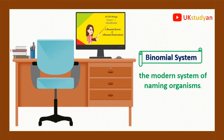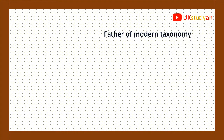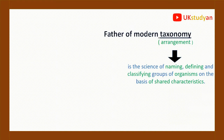Carl Linnaeus is also the father of taxonomy. Taxonomy, in its written form, means arrangement. It is the science of naming, defining, and classifying groups of organisms on the basis of shared characteristics.